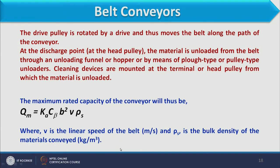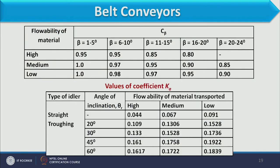Using this expression, the maximum capacity a belt can carry is calculated. The coefficient c_β values for different flowabilities of material—high, medium, or low—are given in a table, where β is the angle of inclination up to 24 degrees. The coefficient k_a values depend on the type of idler, such as straight or troughing, and the angle of inclination and flowability of material.